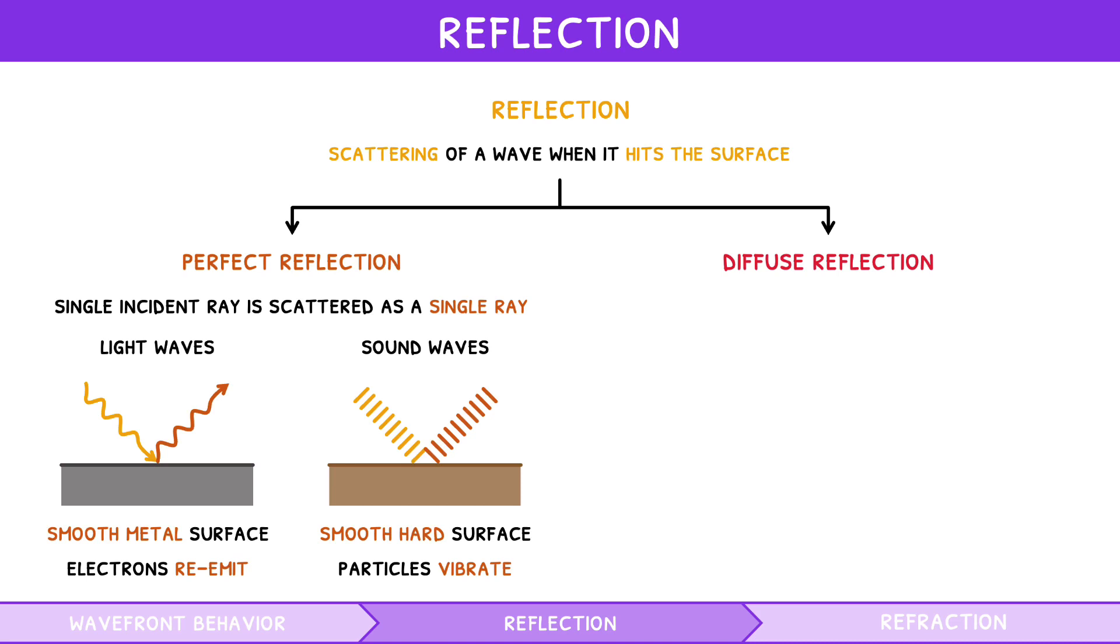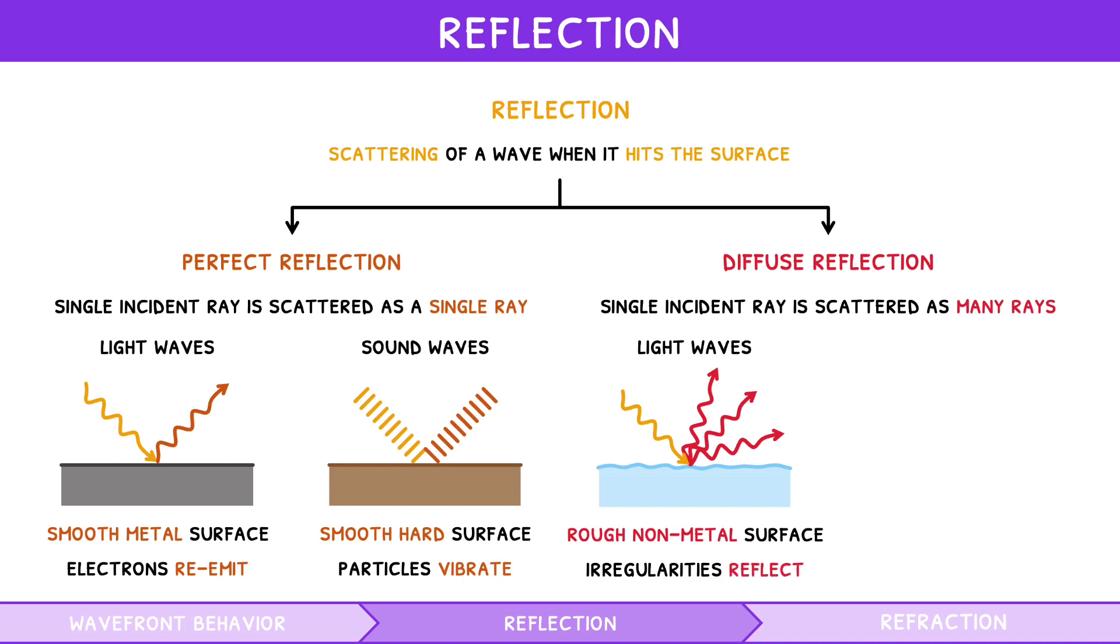Diffuse reflection is when a single incident ray is scattered as many rays. For light waves, this typically occurs with rough, non-metallic surfaces. This is because non-metals have internal structural irregularities that cause multiple reflections, and rough surfaces have external irregularities that cause multiple reflections. For sound waves, this typically occurs with rough, hard surfaces. This is because hard materials reflect sound, and rough surfaces reflect in multiple directions, both previously discussed.